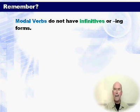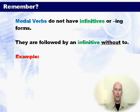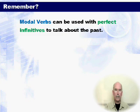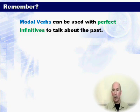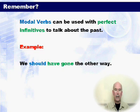Modal verbs do not have infinitives or -ing forms. They are followed by an infinitive without 'to'. For example, 'I will ring you'. Modal verbs can be used with perfect infinitives to talk about the past. An example of this: 'we should have gone the other way'.